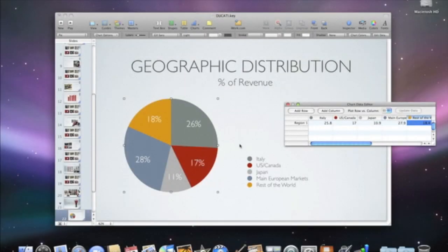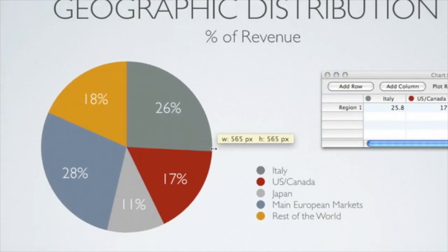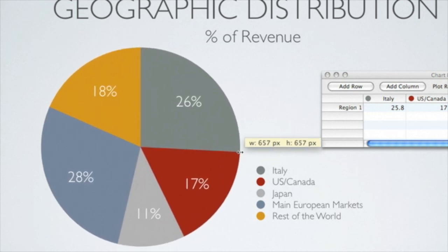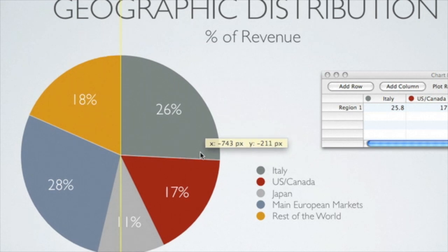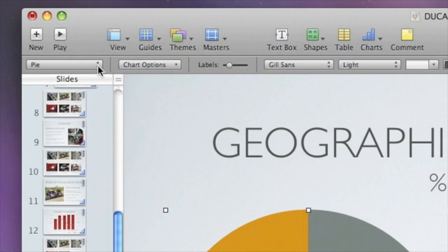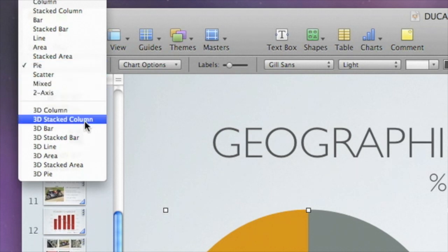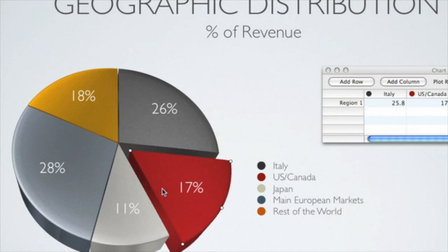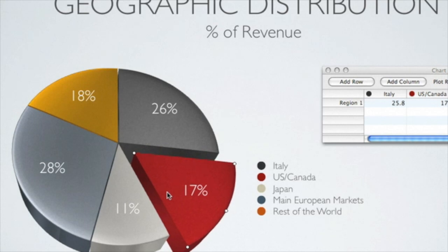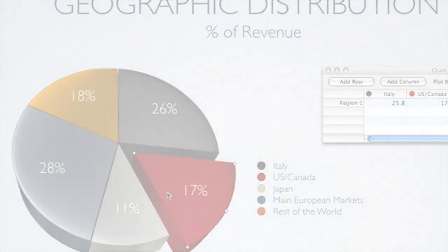Resize the chart by dragging its handles and drag it from the center to position it on your slide. If you change your mind about the type of chart you want to show, you can always choose a new chart from the pop-up menu in the format bar. Let's make this a 3D pie chart, and we'll explode a wedge by selecting it and then dragging.